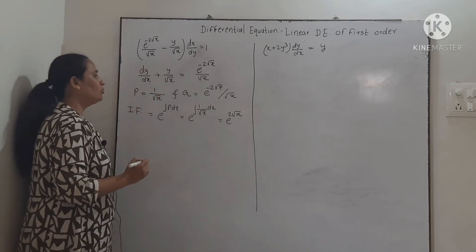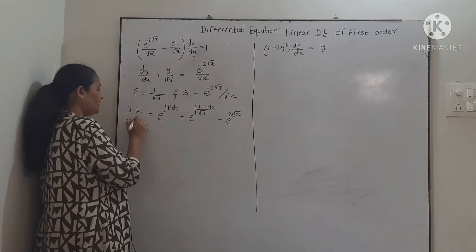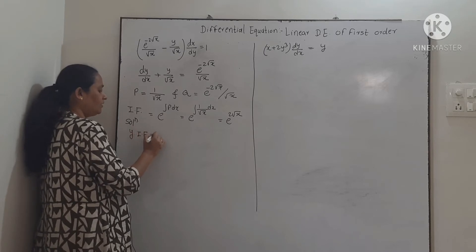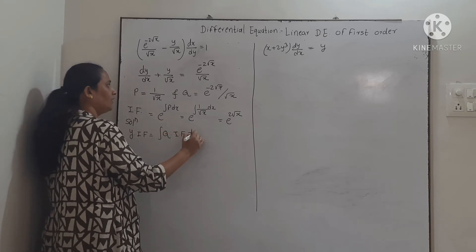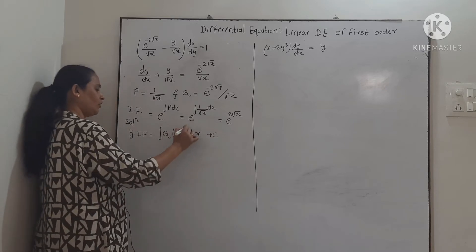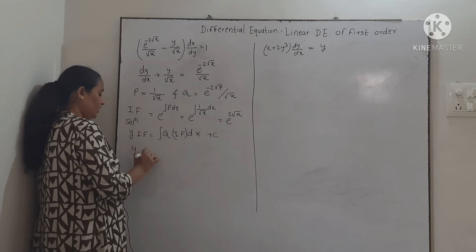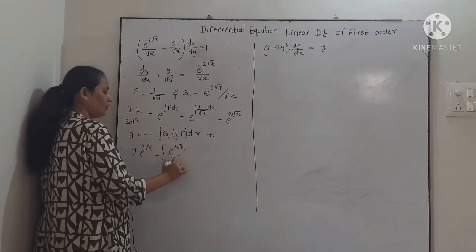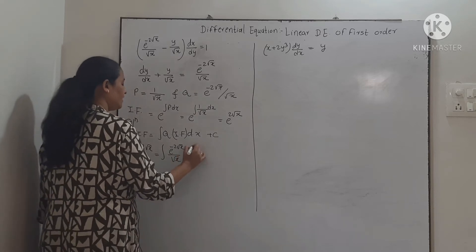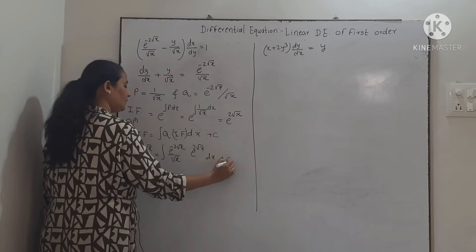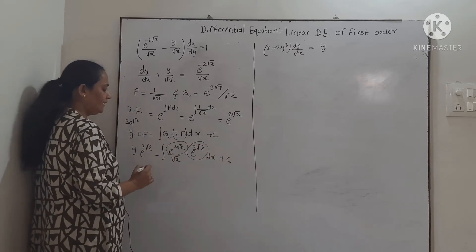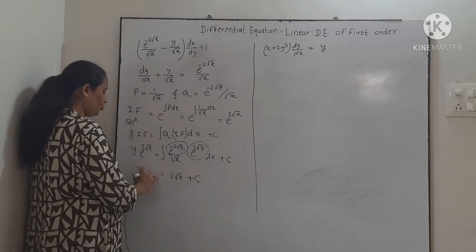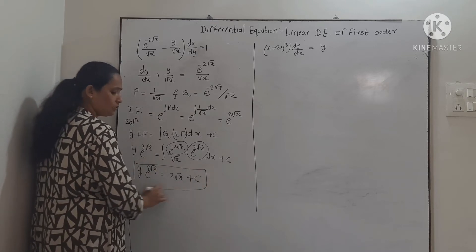Since this is linear in y, the solution is y · e^(2√x) = ∫[e^(−2√x)/√x] · e^(2√x) dx + c. The exponential terms cancel, giving the integral of 1/√x which equals 2√x. Therefore the solution is y · e^(2√x) = 2√x + c.